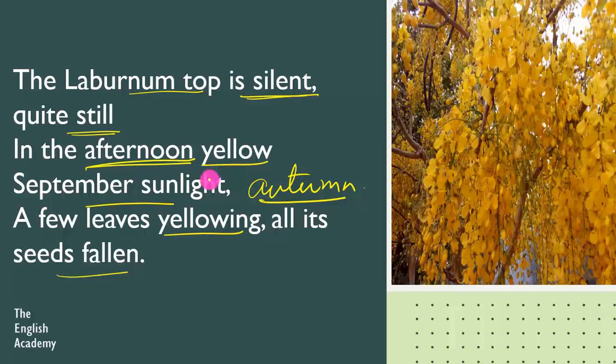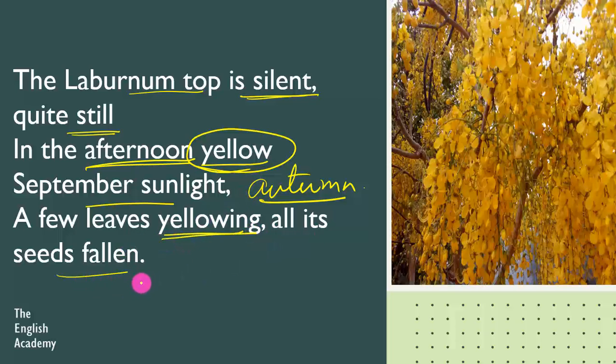Laburnum ke peele rang ke phool bahut hi bright aur chamak rahi hain — Laburnum's yellow flowers are glowing very brightly. A few leaves yellowing, all its seeds fallen. Just like it is the autumn month.